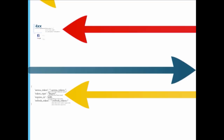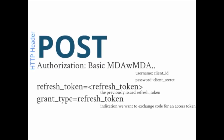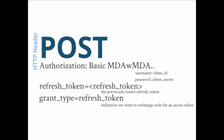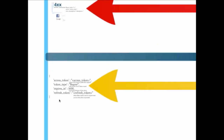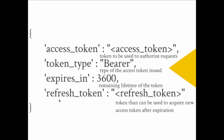To refresh: post to the resource provider again, authenticated with client ID and client secret, sending the refresh token and indicating you want a new access token. You get back a new access token with a new validity period, and possibly a new refresh token to use when that one expires.